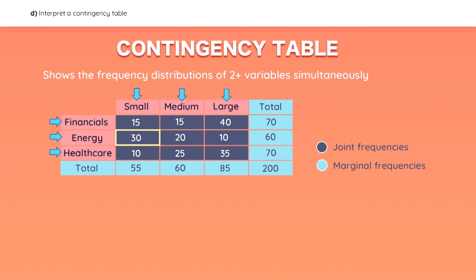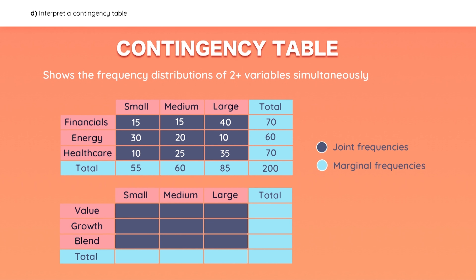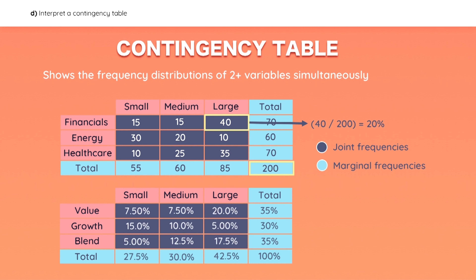Now let's say that you wanted to convert the values into relative frequencies. The total count of observations is 200. So if you take a cell as an example, you simply divide each joint frequency by the total count to get a percentage. Here are all the relative frequencies, if you want to solve them for practice.